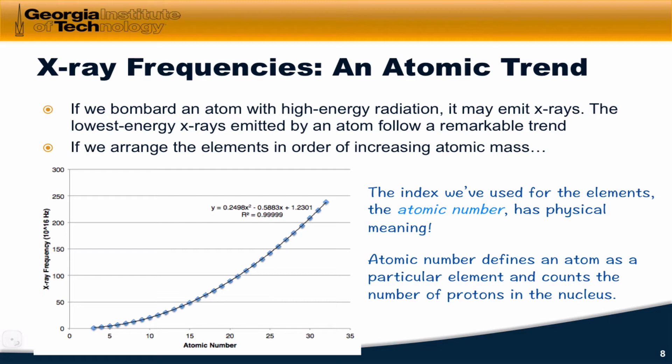If we add or remove a proton to or from the nucleus, we get to a different element. And in fact, that process of adding or removing a proton is a nuclear process. It's not really a chemical process, so we won't concern ourselves here with nuclear processes. The most important thing to know now is that atomic number defines the elements and counts the number of protons in the nucleus.